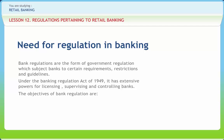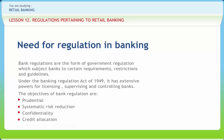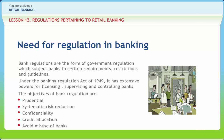The objectives of bank regulation vary between jurisdictions. The most common objectives are: prudential — to reduce the level of risk bank creditors are exposed to; systematic risk reduction — to reduce the risk of disruption from adverse trading conditions causing multiple or major bank failures; confidentiality — to protect banking confidentiality; credit allocation — to direct credit to favored sectors; and to avoid misuse of banks, for example, laundering the proceeds of crime.